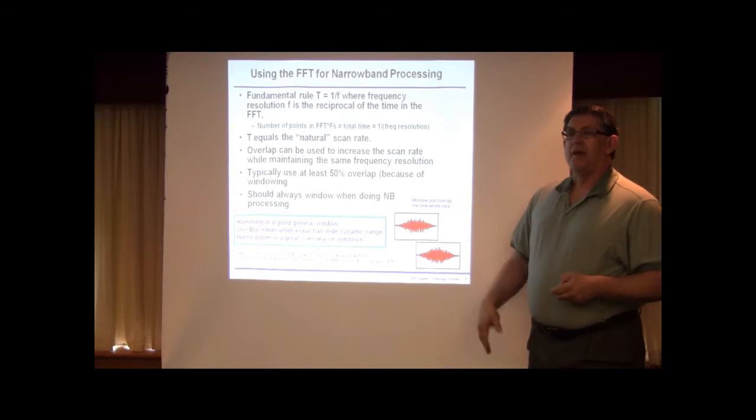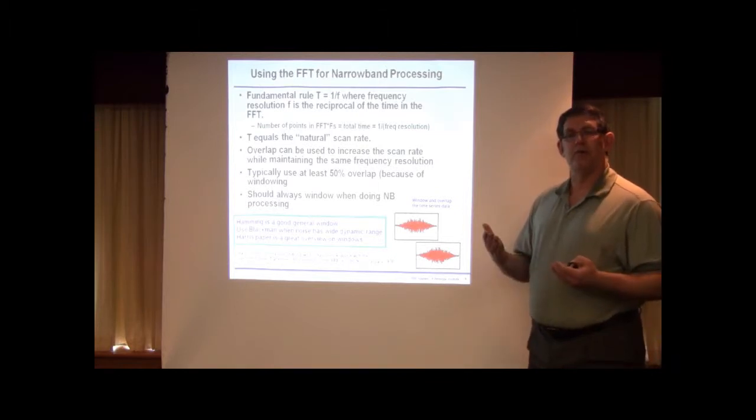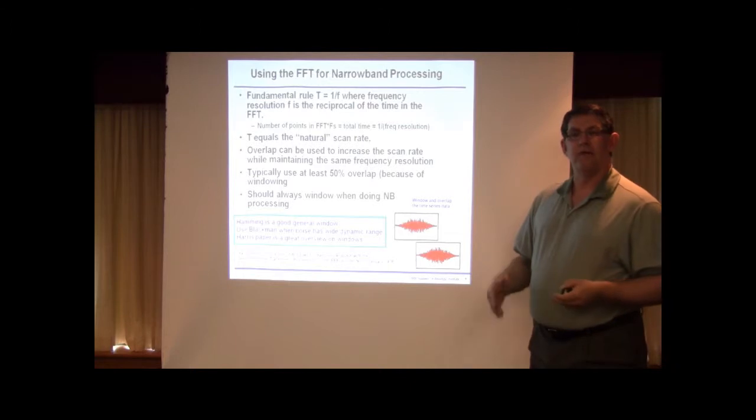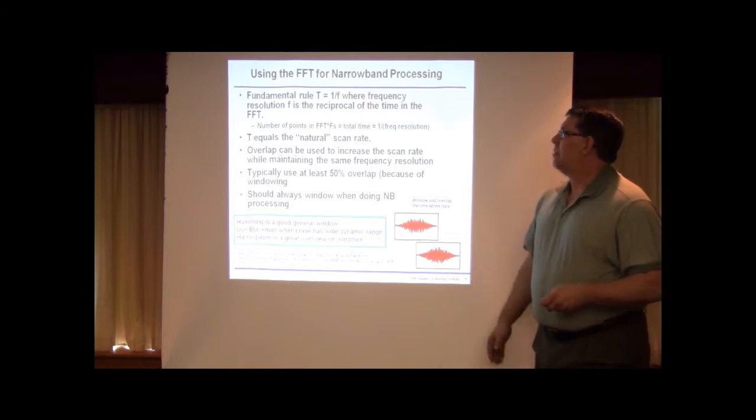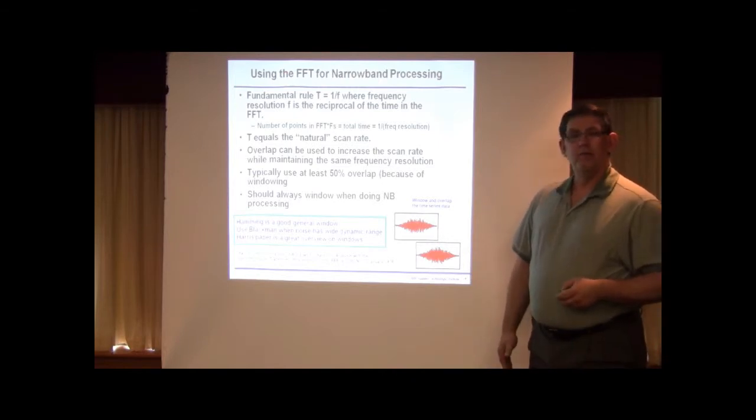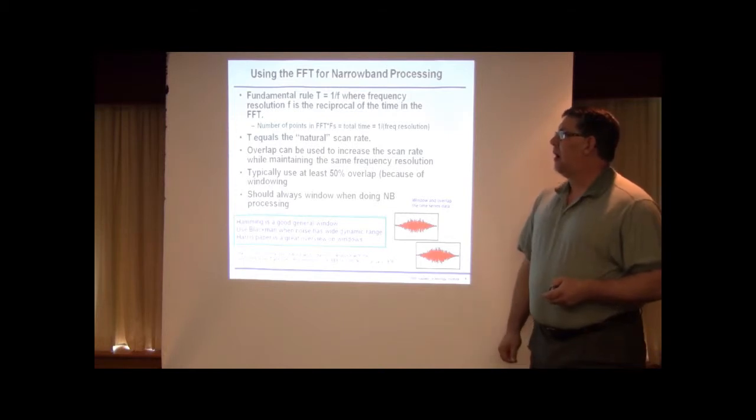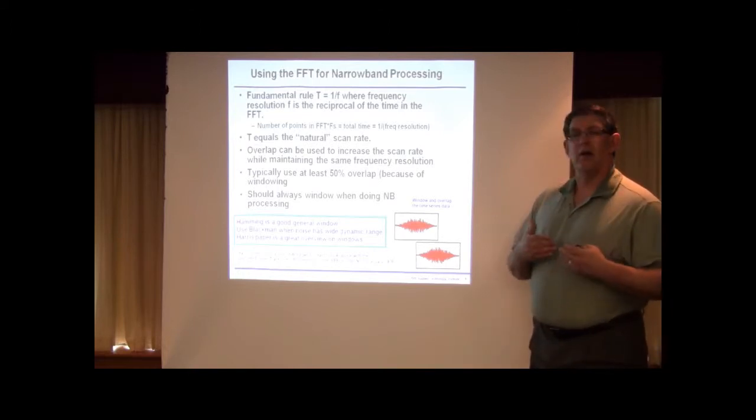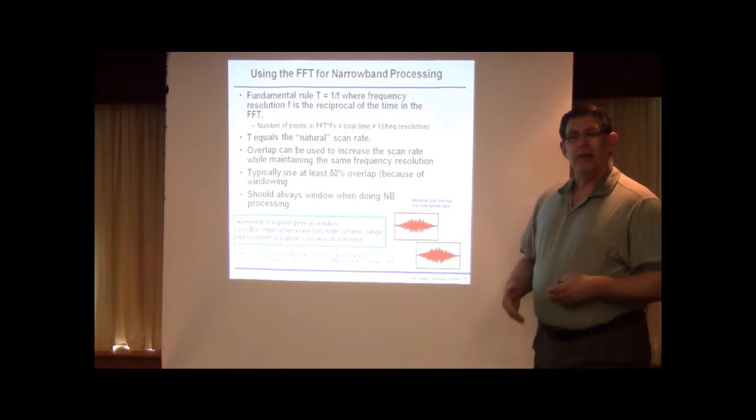When we use FFT for narrowband processing, there's a fundamental rule that T equals 1 over F where F is the frequency resolution. So if we want a frequency resolution of a quarter hertz, we have to do a 4-second FFT. So this is the T is the natural scan rate of the process, whatever size bins, analysis bins you want to use. Overlapping the data using some old data and some new data can be used to increase that scan rate if you want to put things out at a higher scan rate, and that kind of does an interpolation.